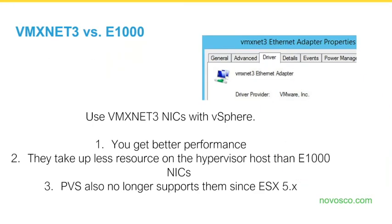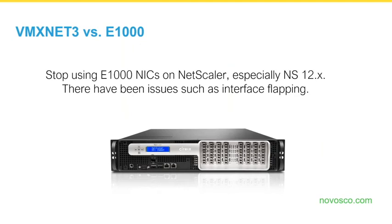For ESX, do away with E1000 NICs and move to VMXNet3. Go through all your Citrix desktops, vDisks, delivery controllers, and StoreFront servers and double-check what NICs you're using. If you're using E1000, raise change controls to switch them to VMXNet3, which gives better performance and uses less resource on the hypervisor. PVS no longer supports E1000 since ESX 5, and for NetScaler, if you're upgrading to NetScaler 12 with E1000 NICs, you'll run into interface flapping and packet loss issues. Make sure E1000 NICs are gone from NetScaler and you're using VMXNet3.